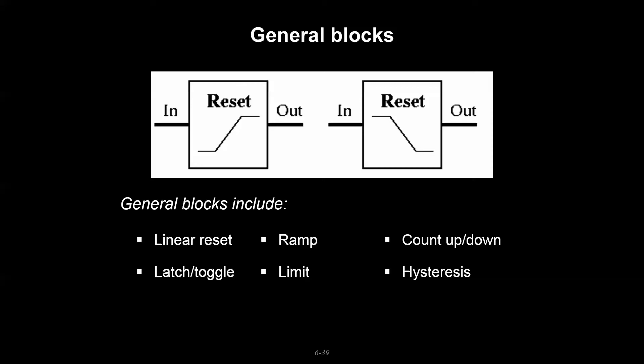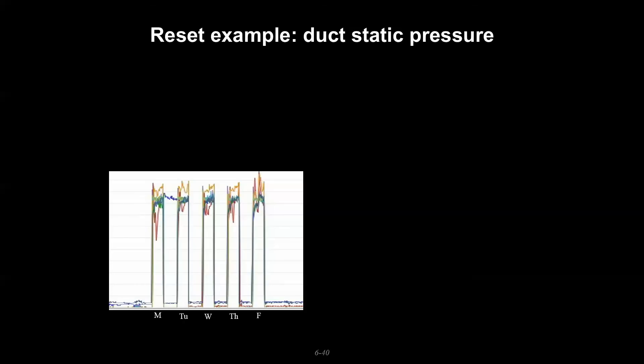Or a hysteresis block which is essentially accounting for some one-way differential as you approach a state change. Here's an example we talked about: duct static pressure in the air side system. Oftentimes a designer sets the duct static based on the worst condition - often your design cooling. How much pressure do you need to move the CFM to all of your boxes and keep everybody happy and meet your design loads?